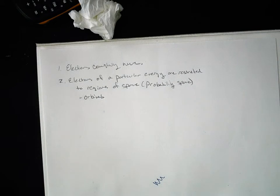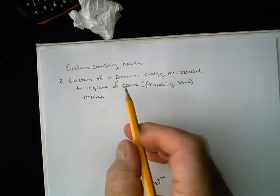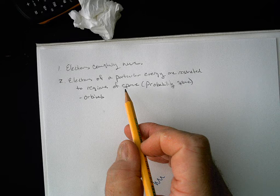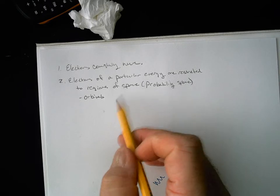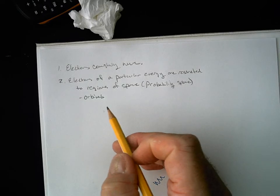So those are called orbitals. Now, if an electron has a particular amount of energy, it is restricted to that orbital or 90% of the time it's going to be in this region of space. The other 10% of the time it could be anywhere in the universe. We talked about that, but think about it as being restricted to just this region, this funky-shaped region.